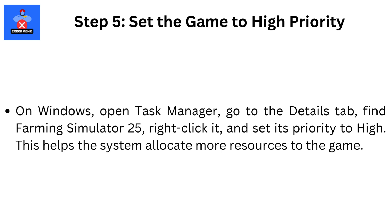Step 5: Set the game to high priority. On Windows, open Task Manager, go to the Details tab, find Farming Simulator 25, right-click it, and set its priority to high. This helps the system allocate more resources to the game.